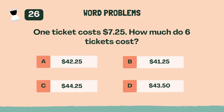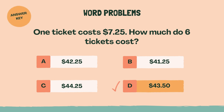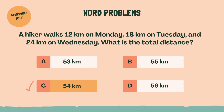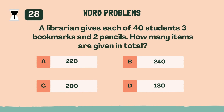The answer is D, $43.50. A hiker walks 12 kilometers on Monday, 18 kilometers on Tuesday, and 24 kilometers on Wednesday. What is the total distance? The answer is C, 54 kilometers.